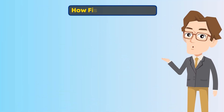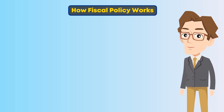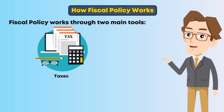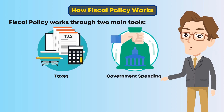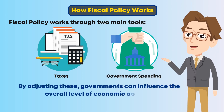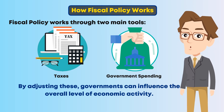Let's explore how fiscal policy works. At its core, fiscal policy works through two main tools: taxes and government spending. By adjusting these, governments can influence the overall level of economic activity.